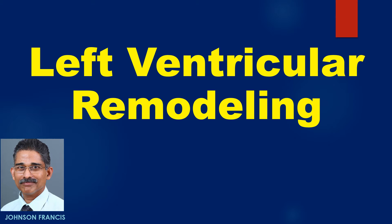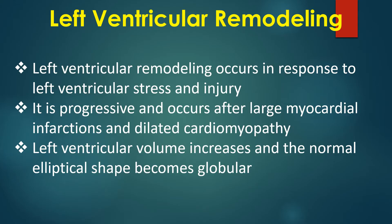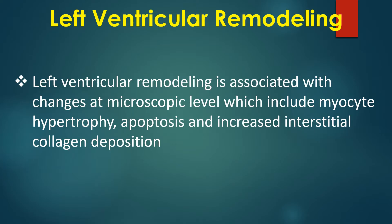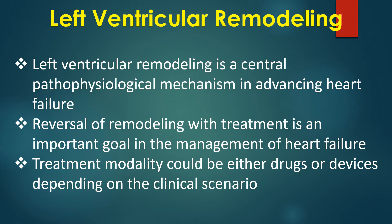Left ventricular remodeling occurs in response to left ventricular stress and injury. It is progressive and occurs after large myocardial infarctions and dilated cardiomyopathy. Left ventricular volume increases and the normal elliptical shape becomes globular. Left ventricular remodeling is associated with changes at the microscopic level, which include myocyte hypertrophy, apoptosis, and increased interstitial collagen deposition. Left ventricular remodeling is a central pathophysiological mechanism in advancing heart failure.